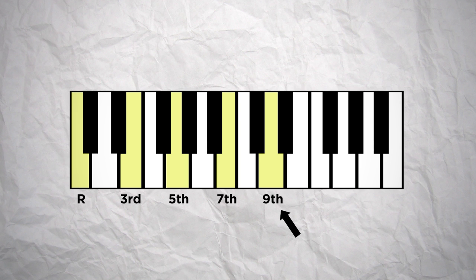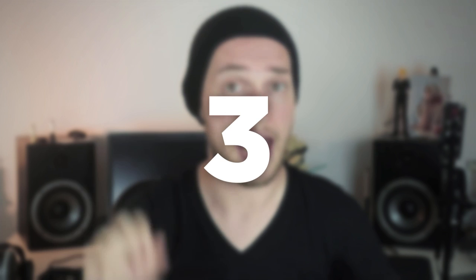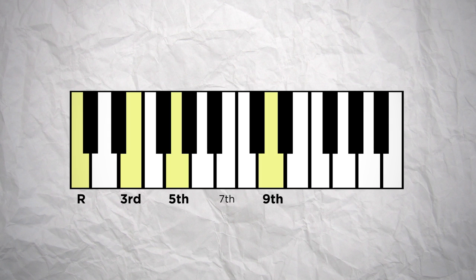Second, this 9th note is actually the same note as the 2nd, but 1 octave higher. So it can introduce friction with the tonic and the 3rd as these notes are very close. To attenuate this friction, it is often advised to keep the 9th an octave higher, so it sounds smoother by letting the chord breathe. But there is no particular rule for that, so you do as you want. And third, when you don't play the 7th of a chord, so you only have a triad with a 9th, we call that add 9.